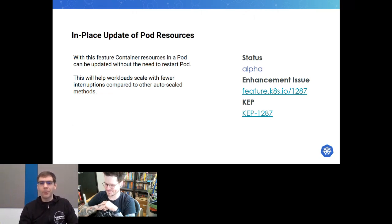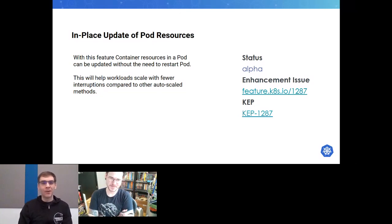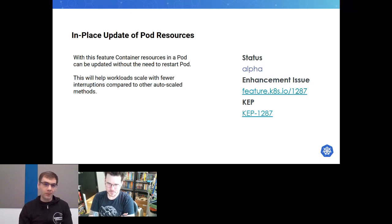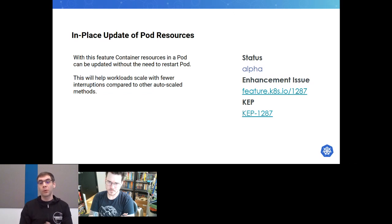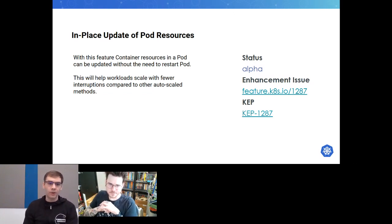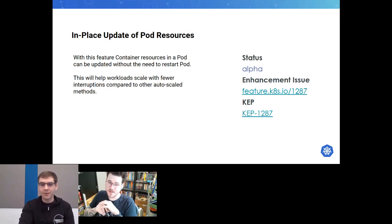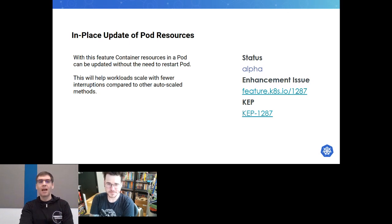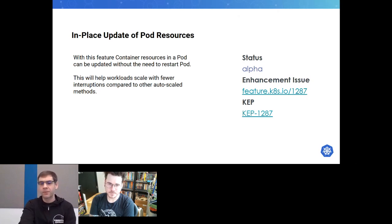The in-place update of pod resources is an alpha feature many people have been waiting for. With this functionality, you can add and subtract resources to running containers without needing to restart them — think of it as in-place vertical pod autoscaling, where instead of rescheduling pods with different resource requests, you update them in place. This will help workloads scale faster with fewer interruptions. Note that this requires specific versions of container runtimes in conjunction with the feature being enabled in the kubelet.